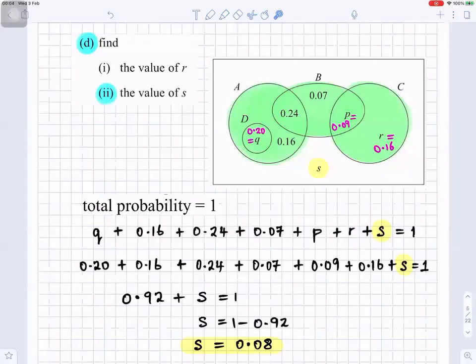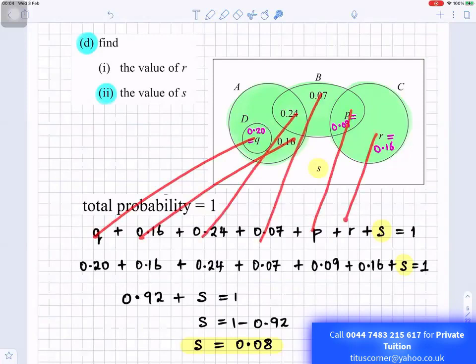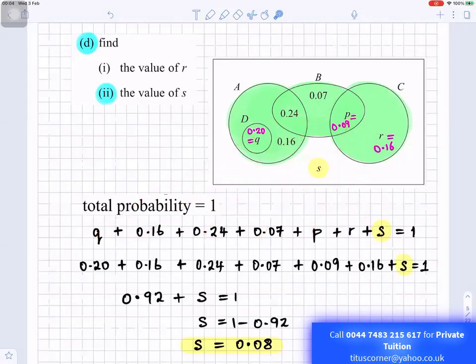Find the value of S. So total probability is always 1. So that means if you add everything which I've colored green there, plus whatever is outside, which is called S, that would be 1. So that means Q plus 0.16 plus 0.24 plus 0.07 plus P plus R plus S is equals to 1. So let's add all the numbers.